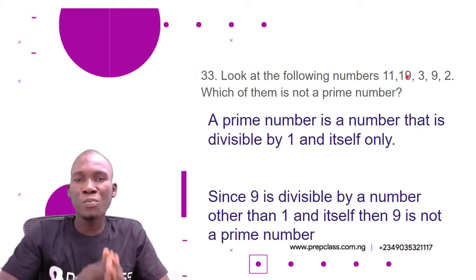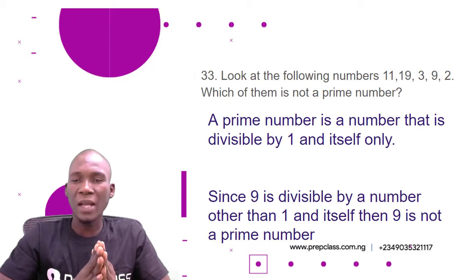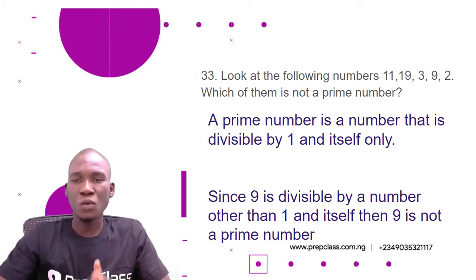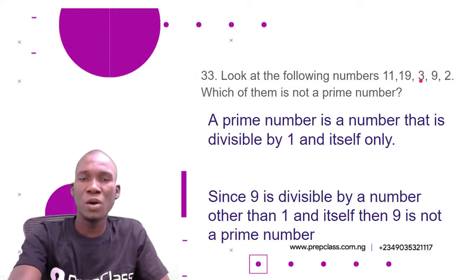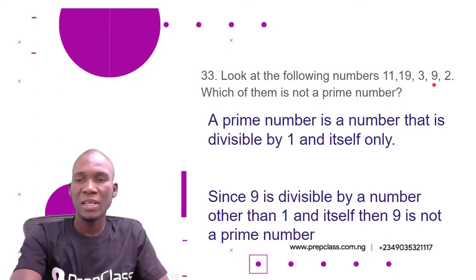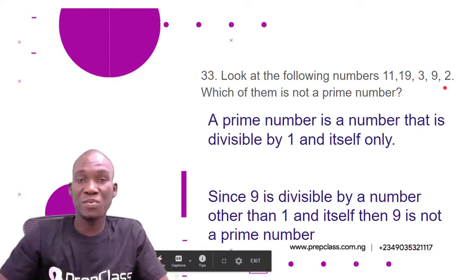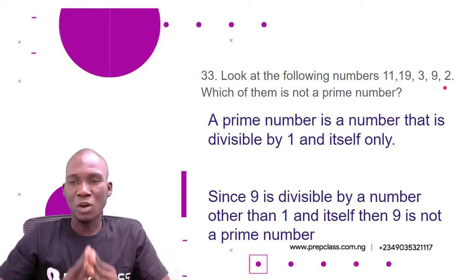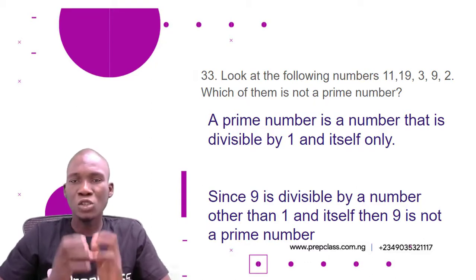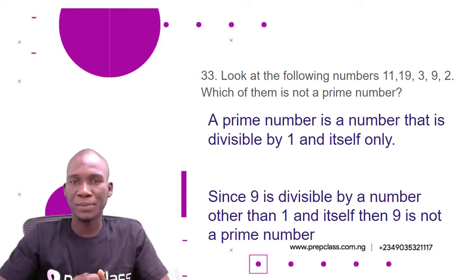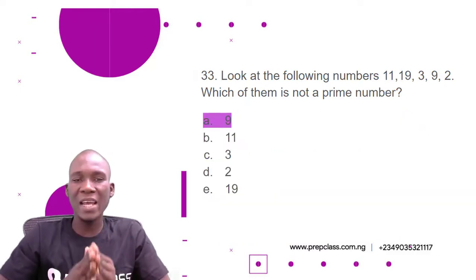19 is also a prime number — no number other than 1 and 19 divides it. 3 is a prime number. But 9 can be divided by 1, by 9, and also by 3 — so 9 is NOT a prime number. 2 is a prime number. Therefore the correct option is A: 9.